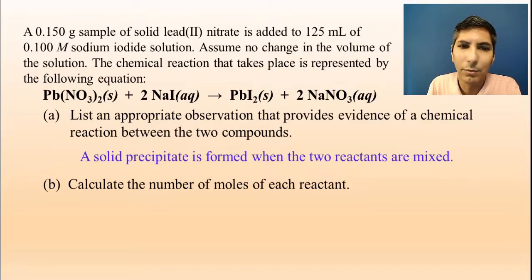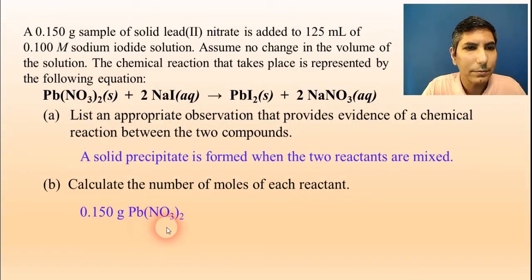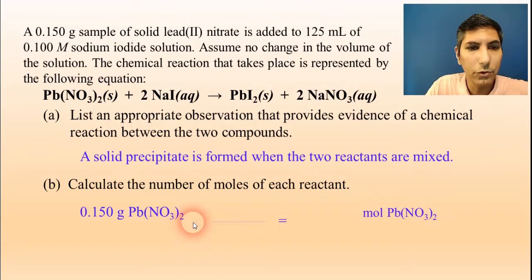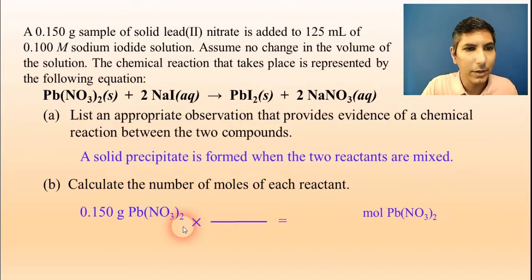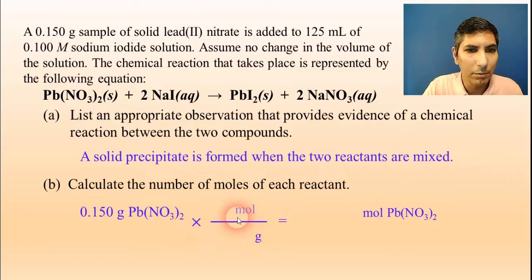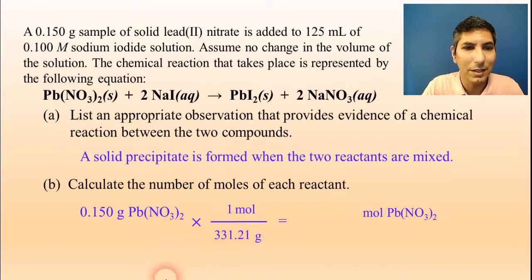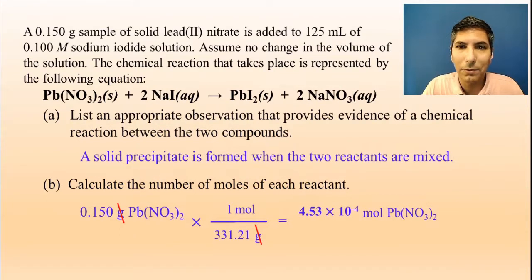Now part B says calculate the number of moles of each reactant. Let's try the 0.150 grams of solid lead(II) nitrate. So I'm going to write that down, and we're going to convert that just straight to moles. This is just a simple grams-to-moles conversion. We're going to have to use the molar mass on the periodic table. So we put grams on the bottom and one mole on top. And how many grams are in one mole of lead(II) nitrate? If you have one lead atom and two nitrogens and six oxygens, you add that up, you should get about 331.21 grams. So we can cancel grams top and bottom. And when you divide this out, you get an answer of about 4.53 times 10 to the negative fourth moles of lead(II) nitrate.